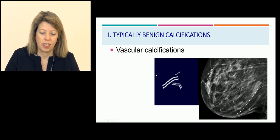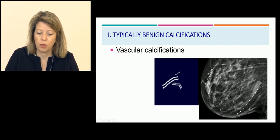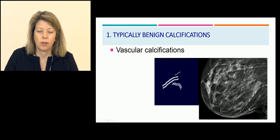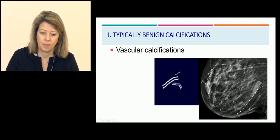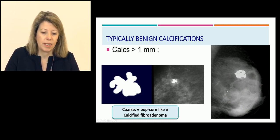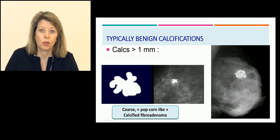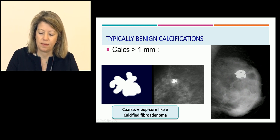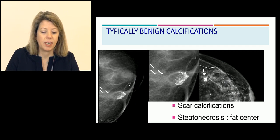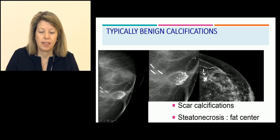These are vascular calcifications — as you can see in this mammography with typically benign vascular calcifications. These patients have diabetes and it could be a marker of arteriosclerosis. Another case of typically benign calcifications: when the size is larger than 1 mm, they are usually benign, as in these examples of coarse popcorn-like calcified fibroadenoma — typically benign.